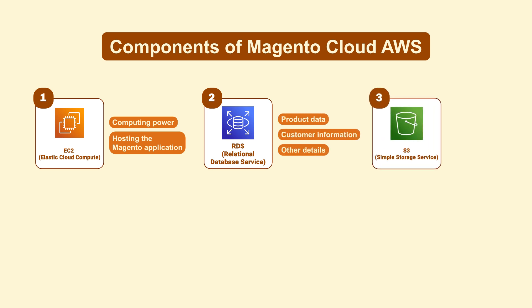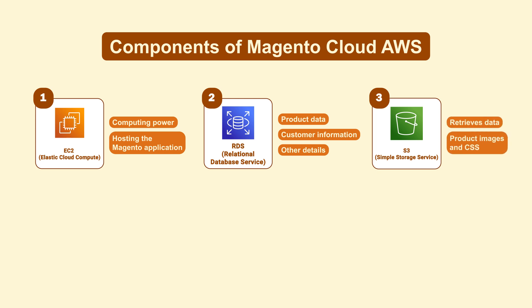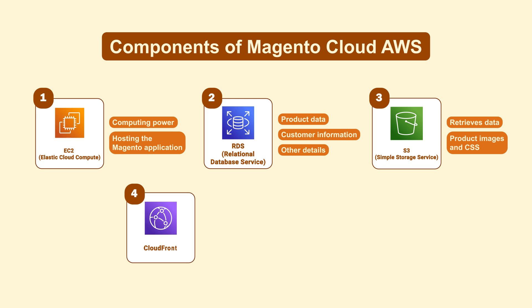Amazon S3, the Simple Storage Service, stores and retrieves any amount of data, ideal for static files like product images and CSS. Amazon CloudFront delivers data, videos, applications, and APIs globally.